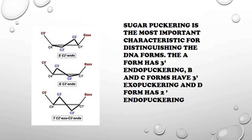Sugar puckering is one of the reasons for DNA conformations. A puckered ring is when a ring bends forming a kind of board structure, also being in a chair-type shape. Sugar puckering is the most important characteristic for distinguishing the DNA forms, as it corresponds to sugar conformations in DNA.